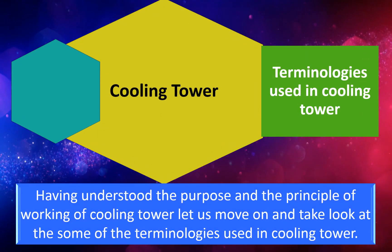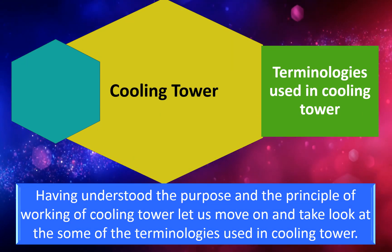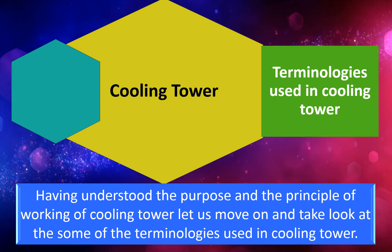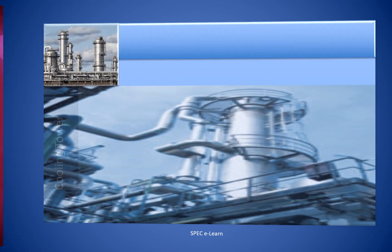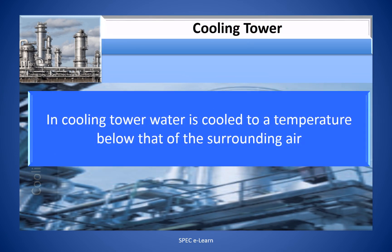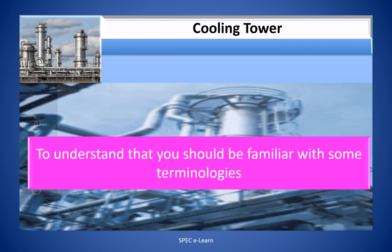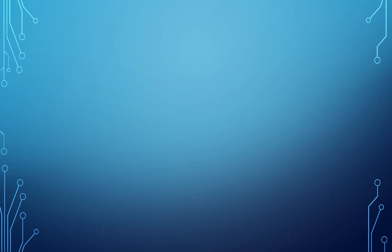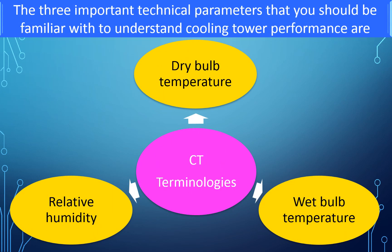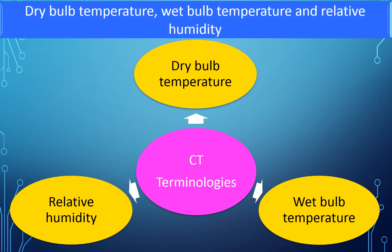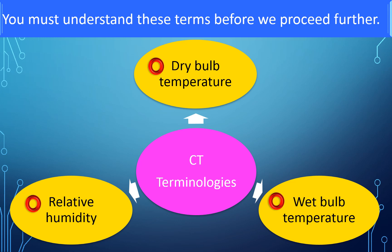Terminologies used in cooling tower. Having understood the purpose and working principle, let us look at some key terminologies. In a cooling tower, water is cooled to a temperature below that of the surrounding air. The three important technical parameters you should be familiar with are dry bulb temperature, wet bulb temperature, and relative humidity. You must understand these terms before proceeding further.